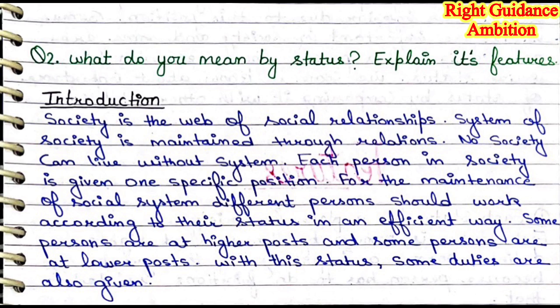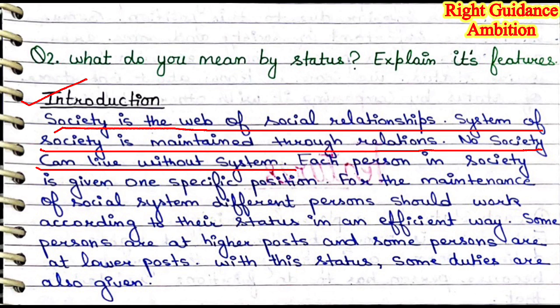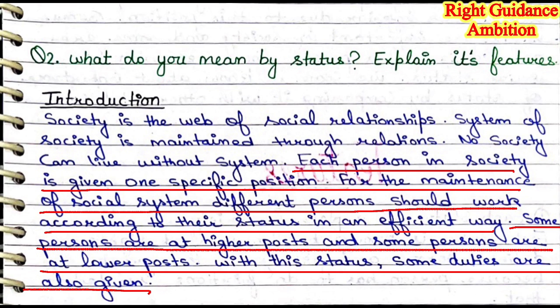Now, without wasting more time, let's start with our topic. Question number two: what do you mean by status? Explain its features. First of all, you have to write the introduction. Society is the web of social relationships. In a society, there are many social relationships. There are some formal and informal relations. The system of society is maintained through these relations. Every society has a system based on their relationships. It is not possible that there are no relations between people — if there are no relations, that society will not exist. In society, every person is given a specific position.